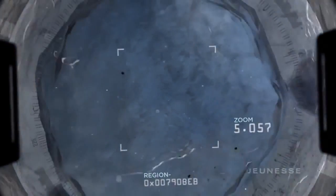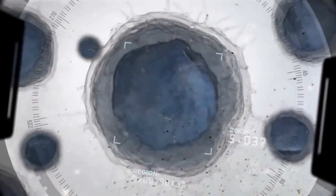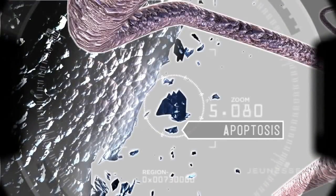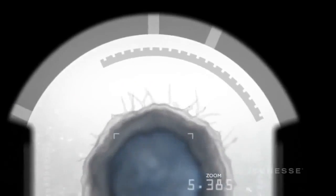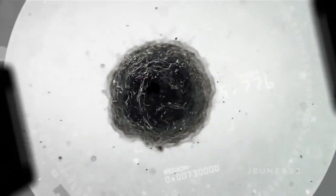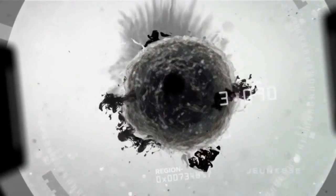When telomeres become too short, our cells can no longer carry out their critical functions. Cells start to self-destruct and eventually die. Scientists call this apoptosis. Cells dying is one thing, but when cells simply stop functioning, they can spew out dangerous free radicals and inflammatory molecules that essentially damage the nearby cells.